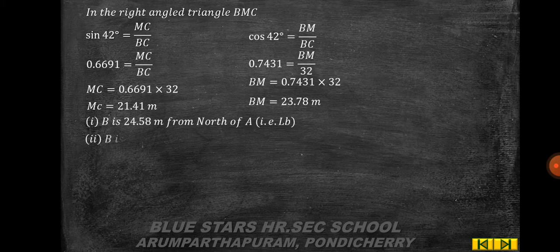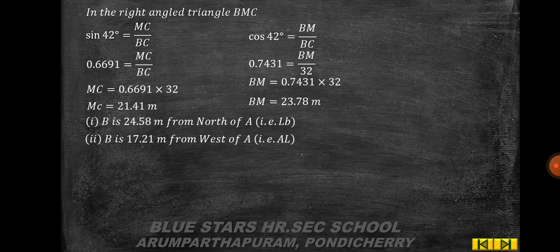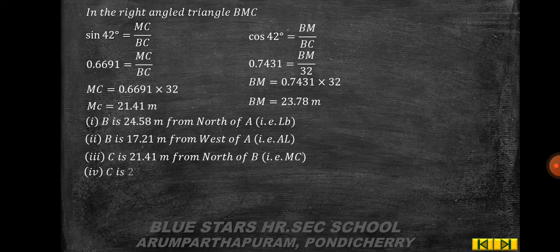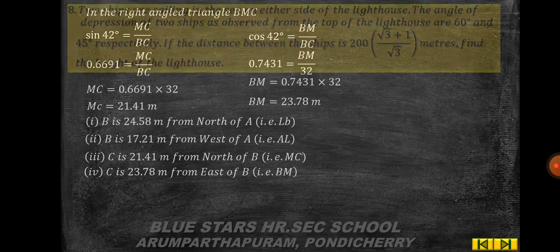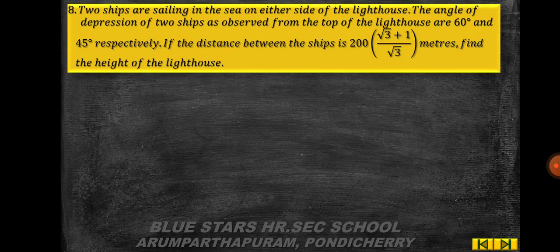Results: (i) B is 24.58 km north of A (LB); (ii) B is 17.21 km west of A (AL); (iii) C is 21.41 km north of B (MC); (iv) C is 23.78 km east of B (BM).